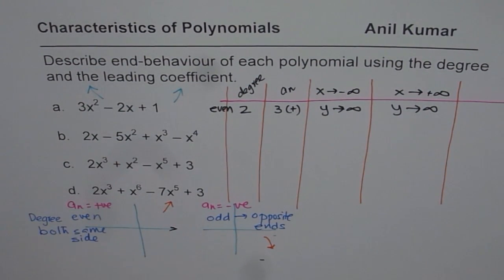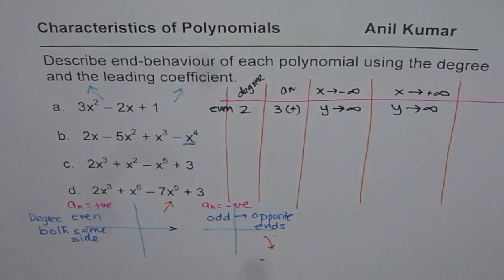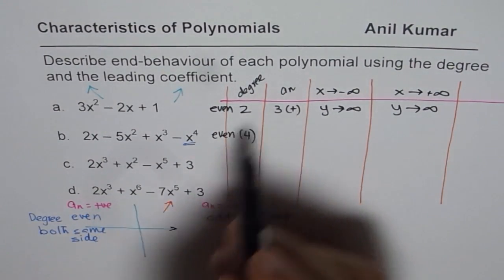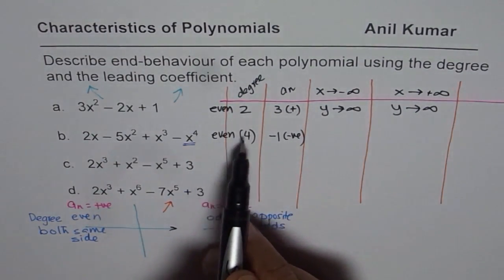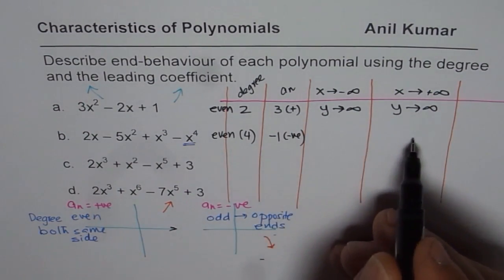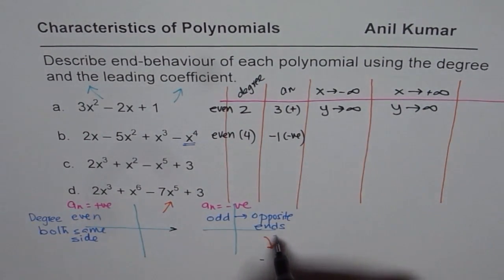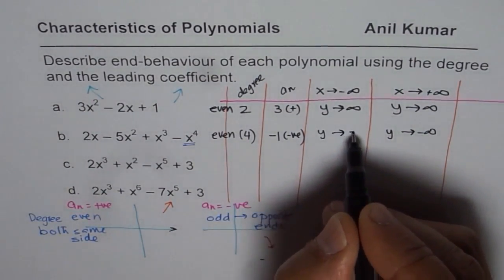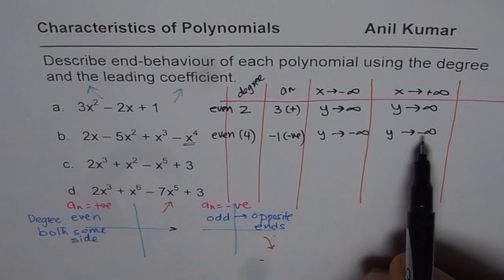In the next example, the leading term is x to the power of 4, so the degree is 4, which is even. The leading coefficient is -1, which is negative. Even degree means both ends are on the same side, and negative means right side down. So y approaches negative infinity for both x → +∞ and x → -∞.